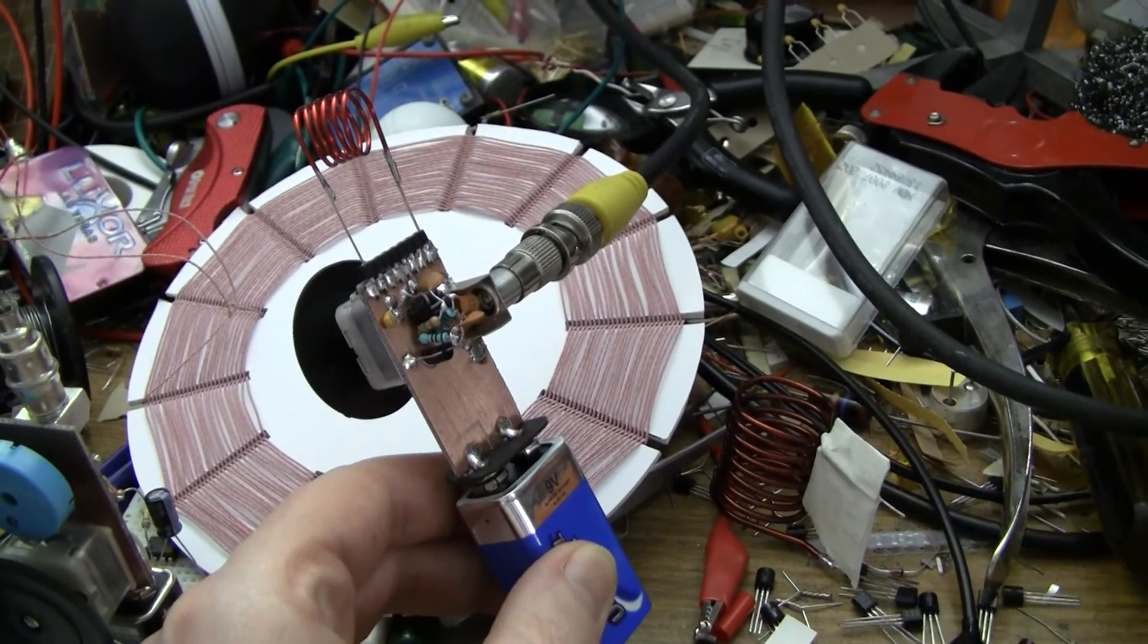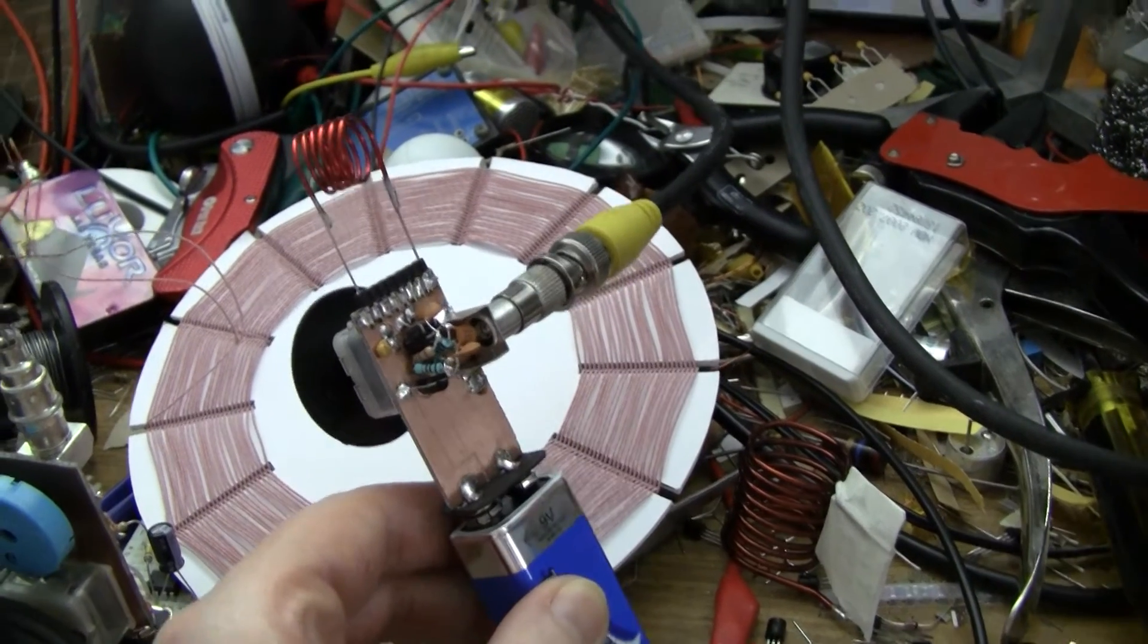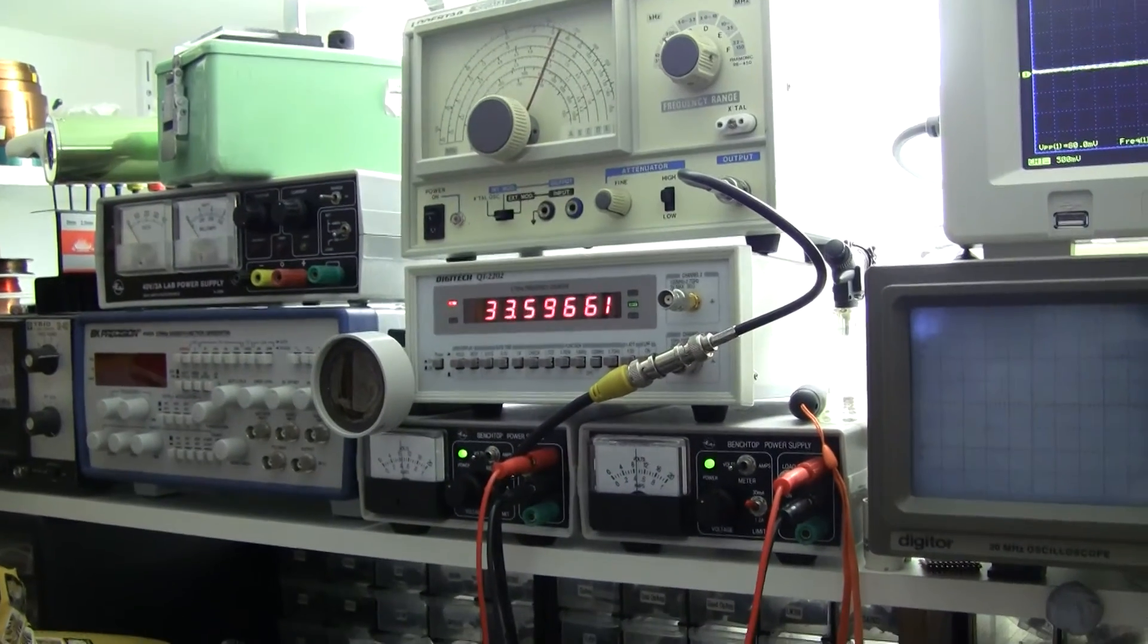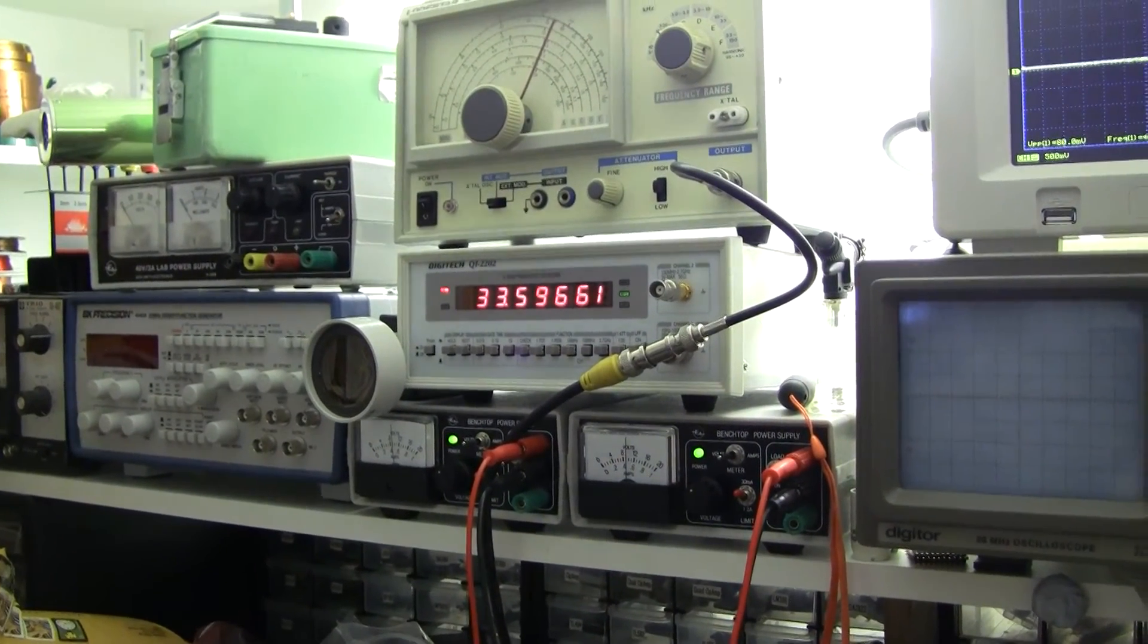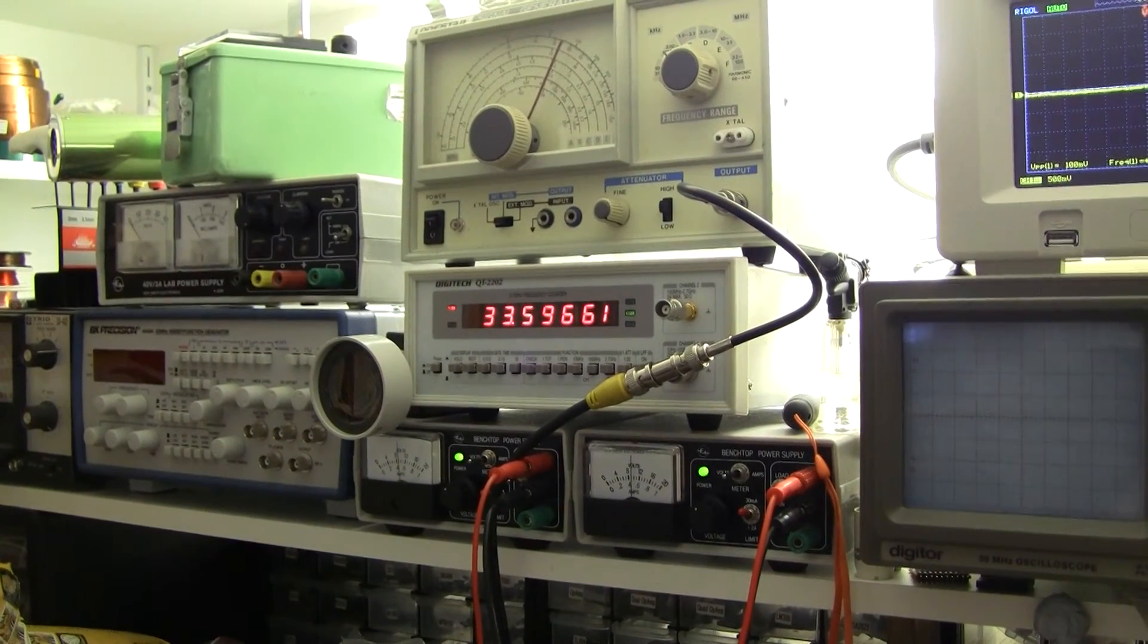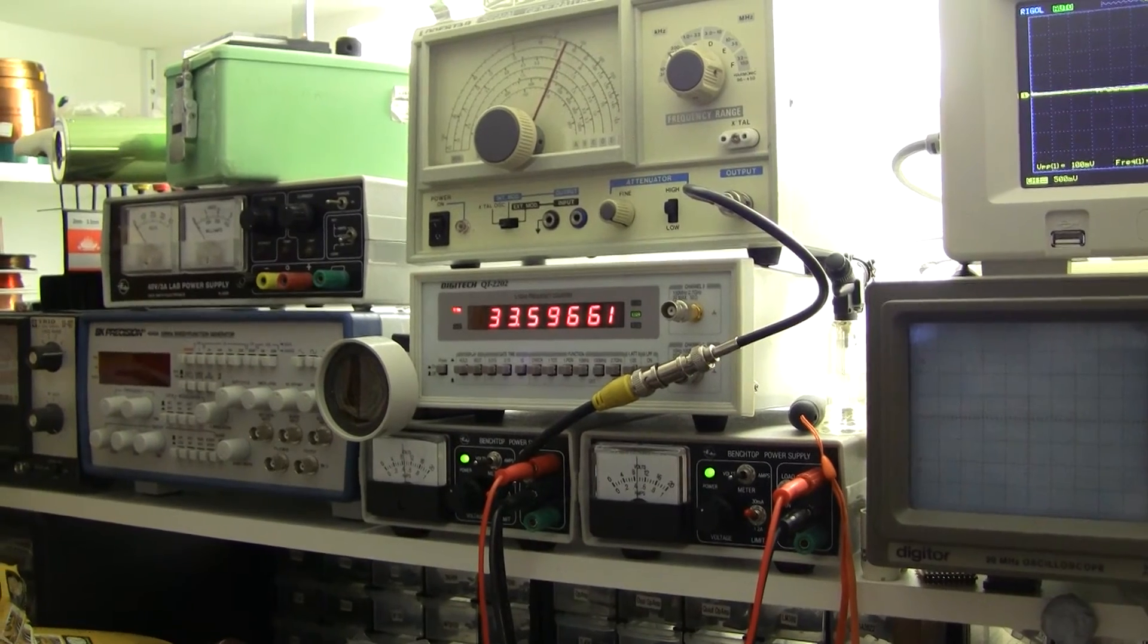It takes up hardly any room on the board. The board's mostly empty. As you can see, I've added a connector where I can plug it into my frequency counter, which it is currently plugged in. It's oscillating around 33.6 MHz, and quite stable too. That's four digits down, so that's kilohertz stability.